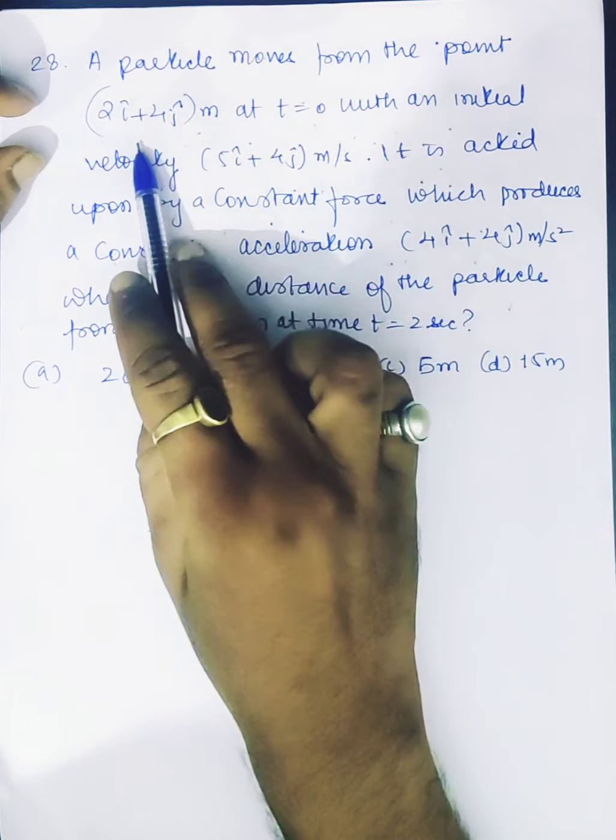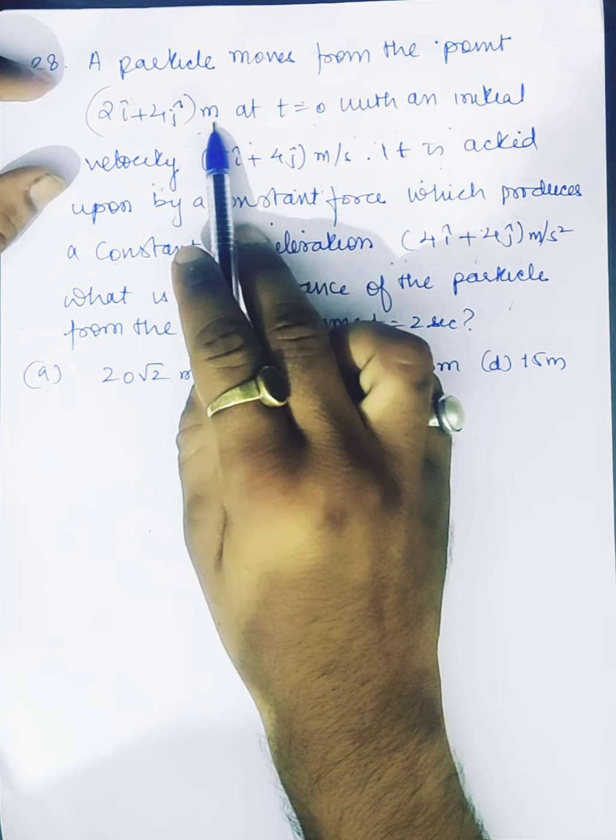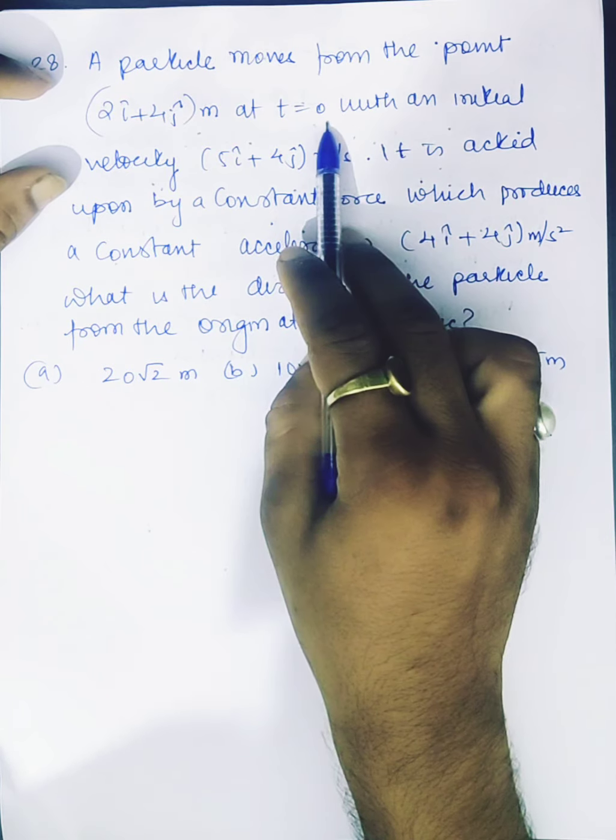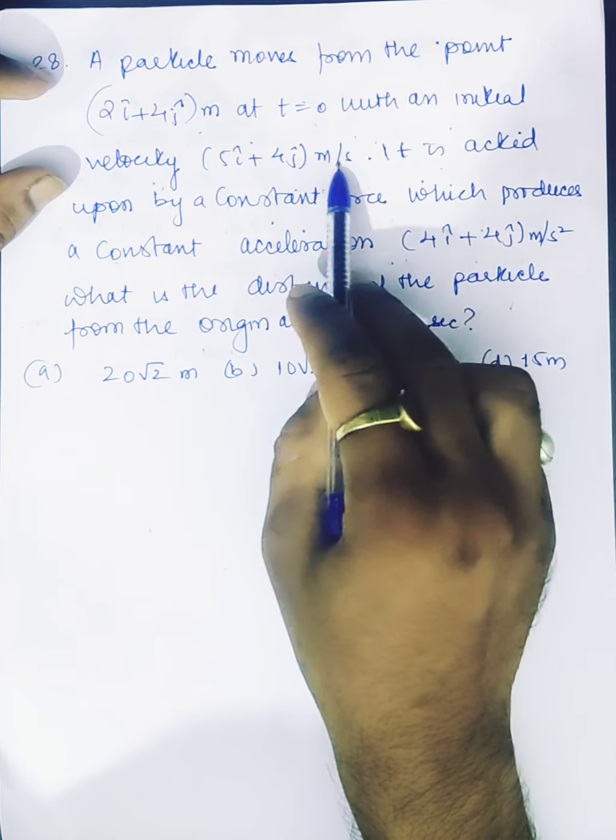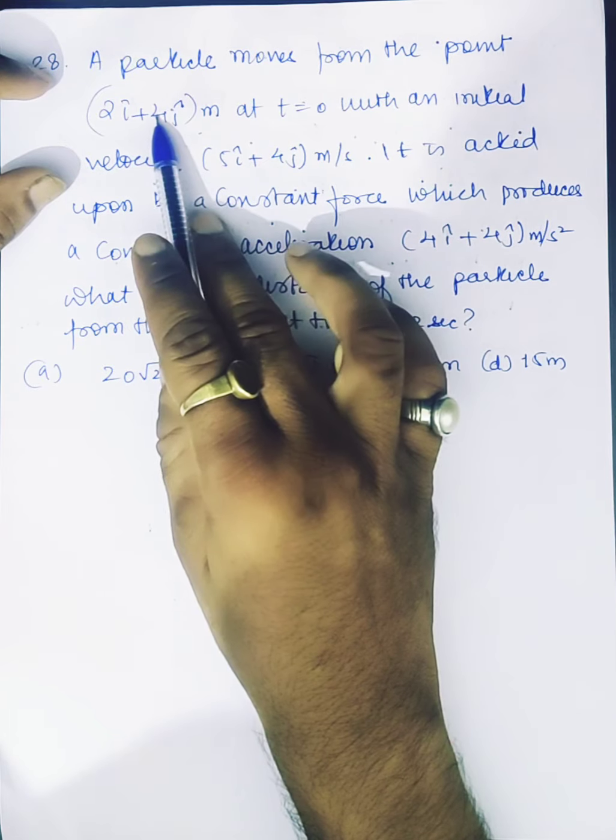A particle moves from the point 2i plus 4j meter at t equal to 0 with an initial velocity of 5i plus 4j meter per second.